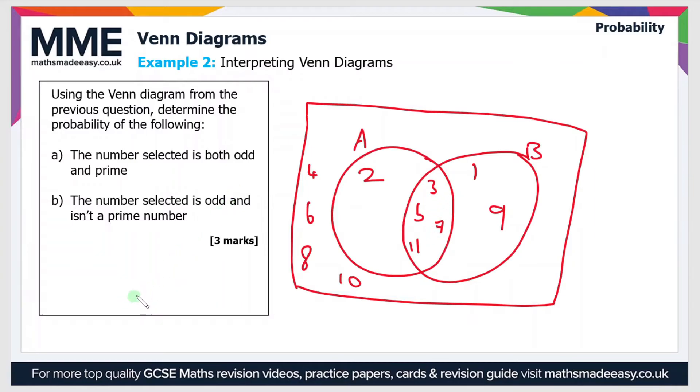If you remember, there were 11 numbers in total because it's 1 to 11. And there's 4 numbers in the intersection. So the probability is 4 out of 11.